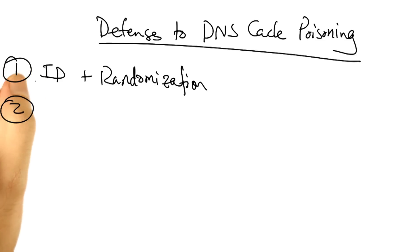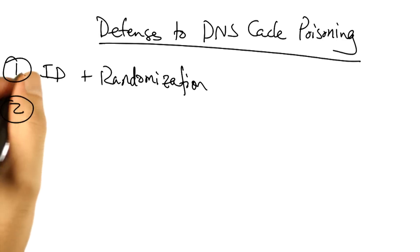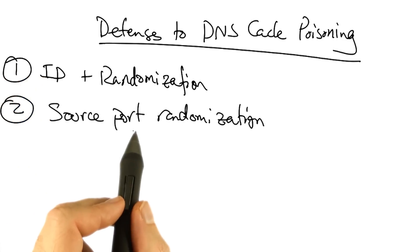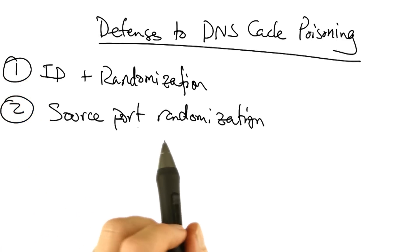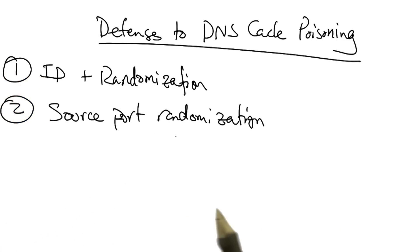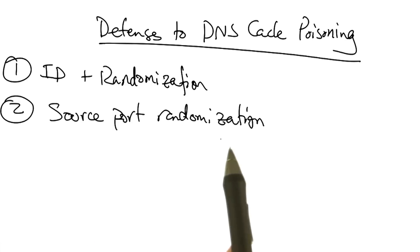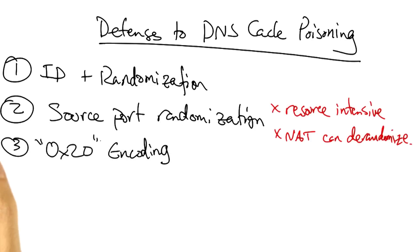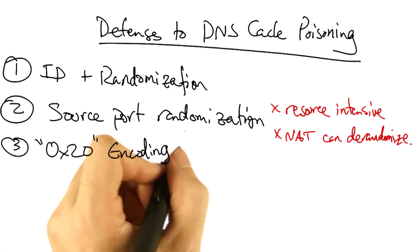In addition to having a query ID and randomization of that ID, the resolver can randomize the source port on which it sends the query, thereby adding an additional 16 bits of entropy to the ID associated with the query. Unfortunately, picking a random source port can be resource intensive, and also a network address translator or NAT could de-randomize the port.